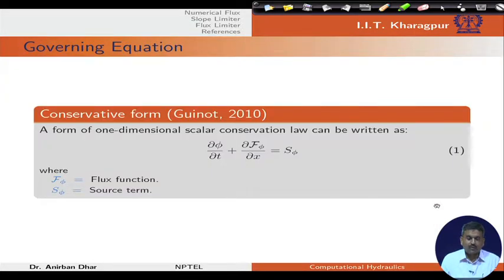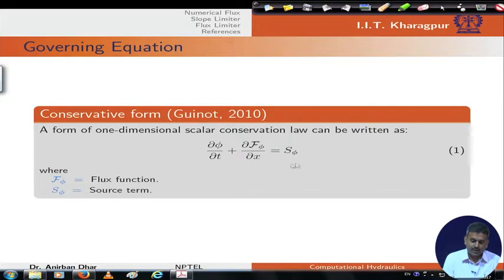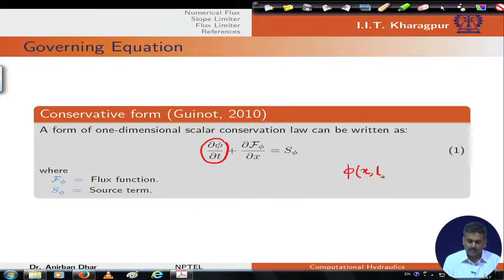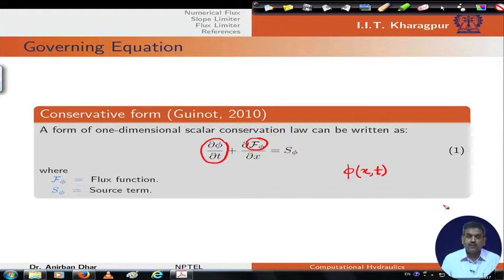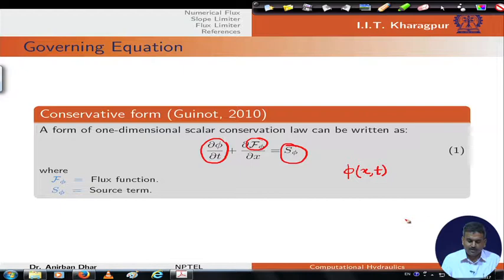This is our well-known governing equation that we have utilized in our earlier lecture classes. Phi is again the general variable, and in one dimension we have only x-t representation. F is our flux function; we can have different representations for this flux function, and S(phi) is our source term. This is our one-dimensional conservation law.